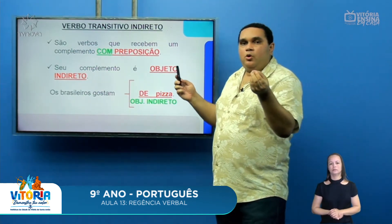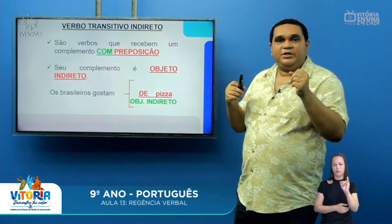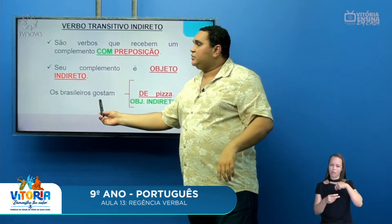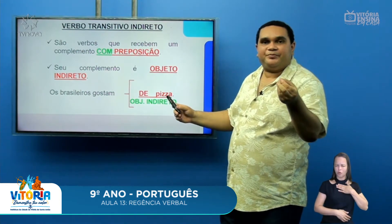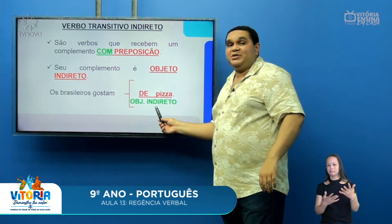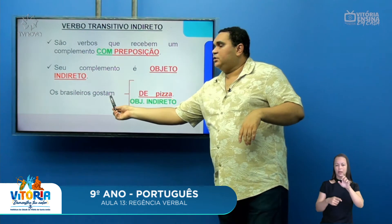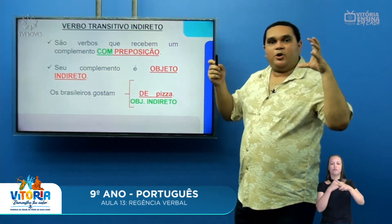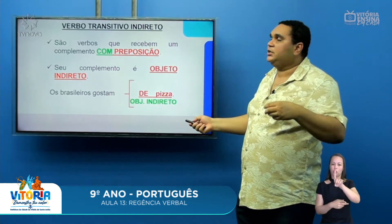O complemento do verbo transitivo indireto é o objeto indireto, e entre esse verbo e o complemento vai aparecer uma preposição. Por exemplo: 'Os brasileiros gostam de pizza.' Pizza é o objeto indireto. Percebam que entre o verbo gostar e 'pizza' aparece a preposição 'de'. É uma relação indireta — por isso se diz que é um verbo transitivo indireto.